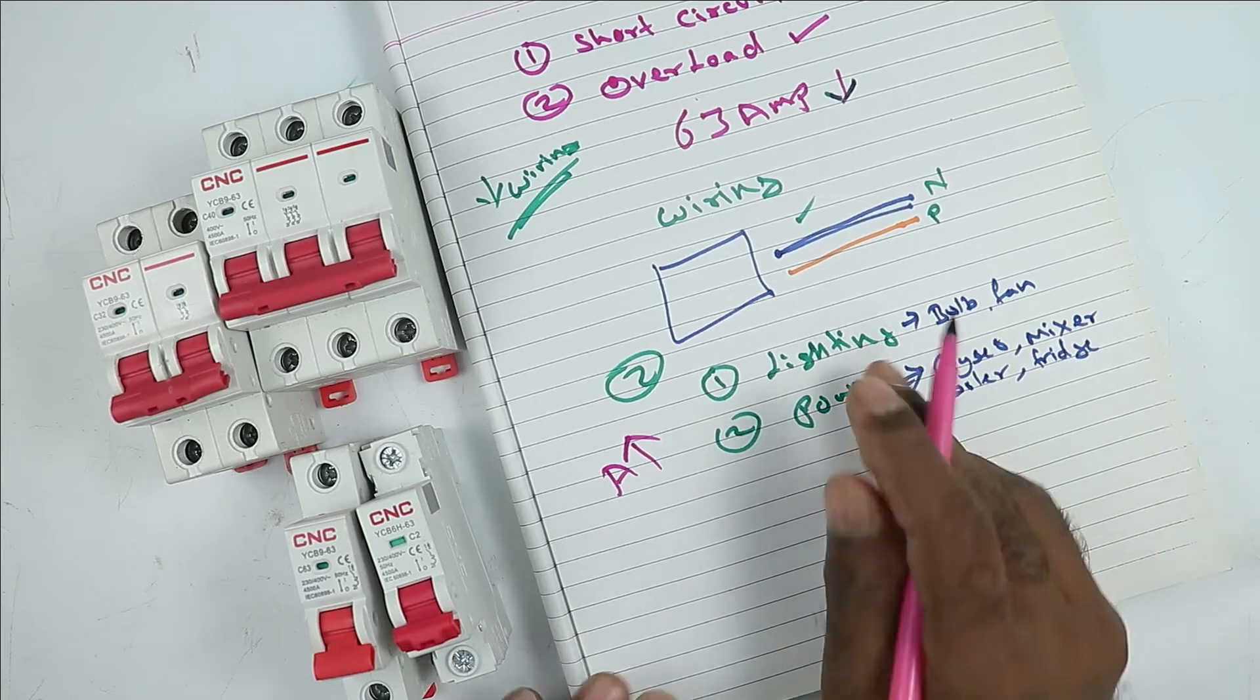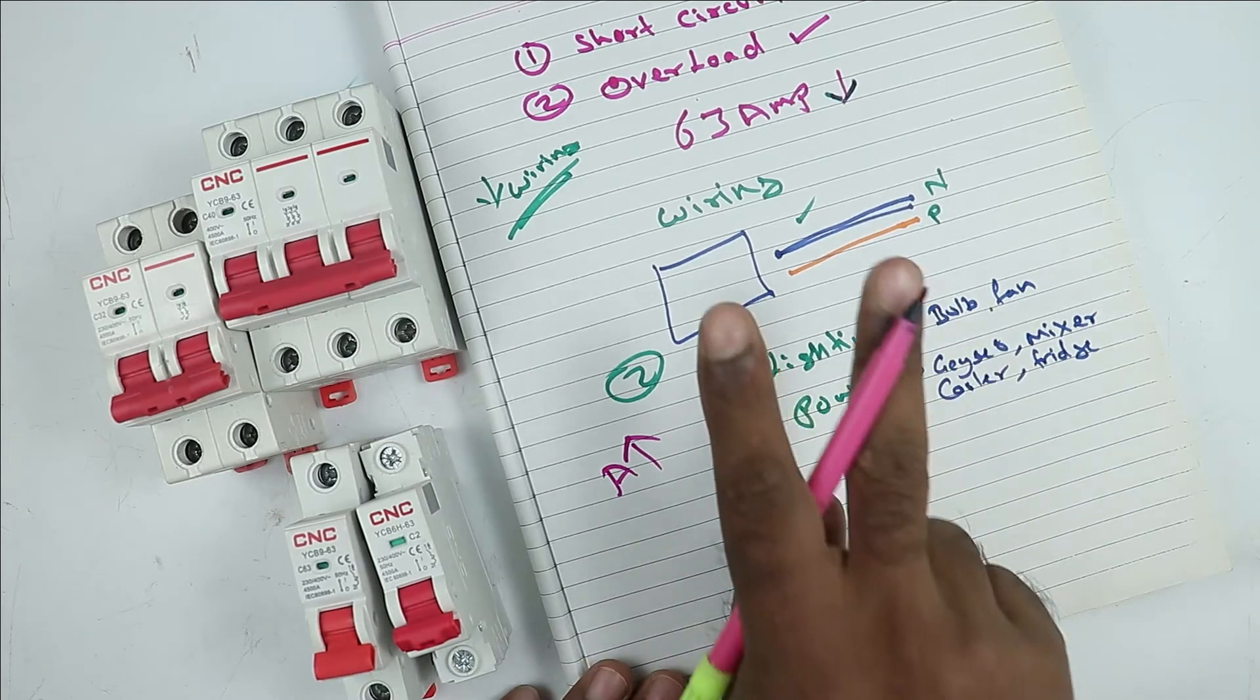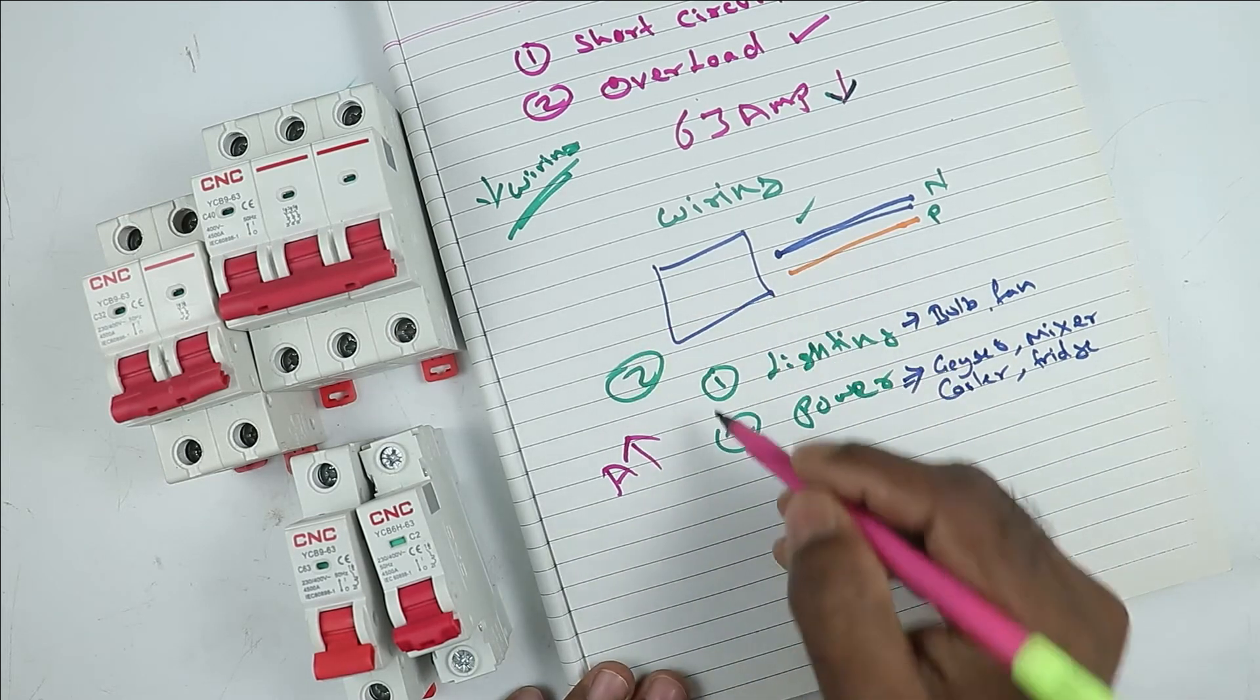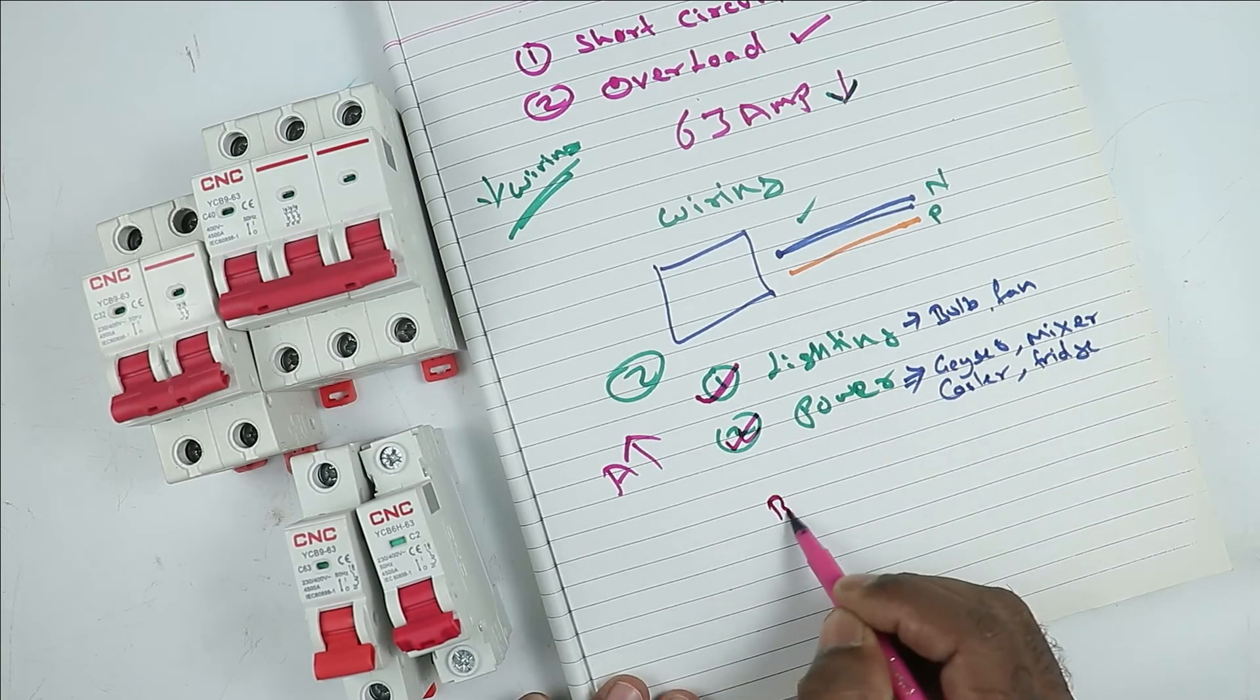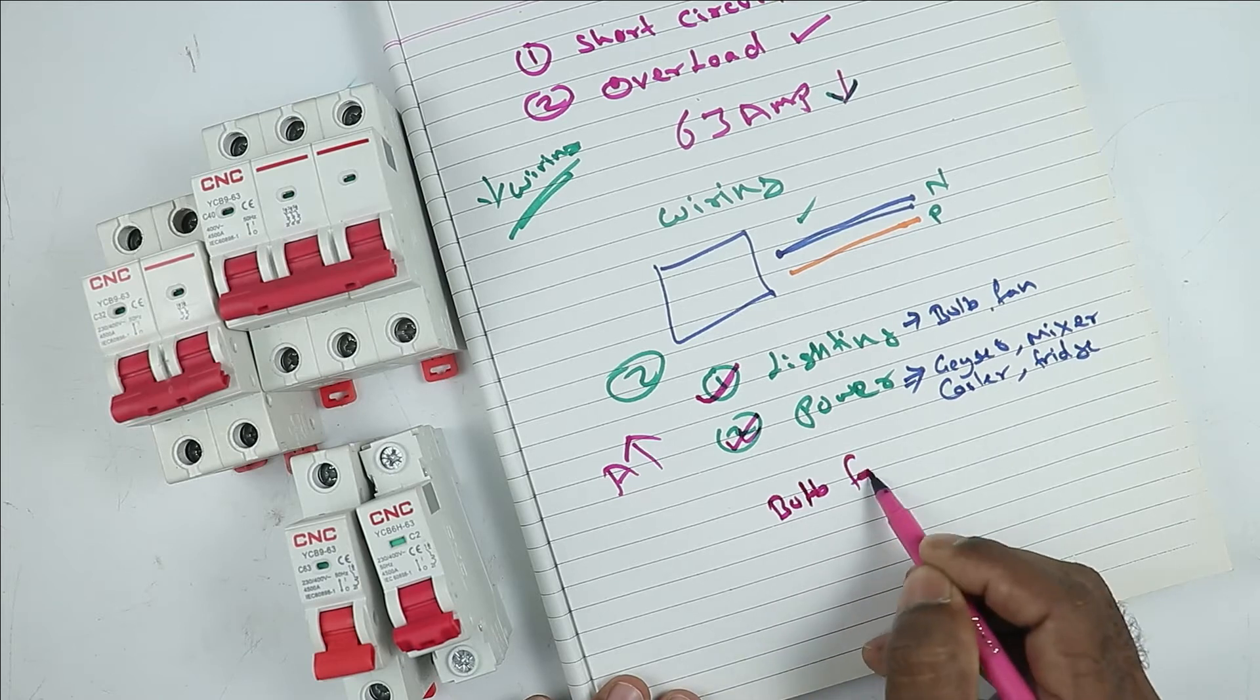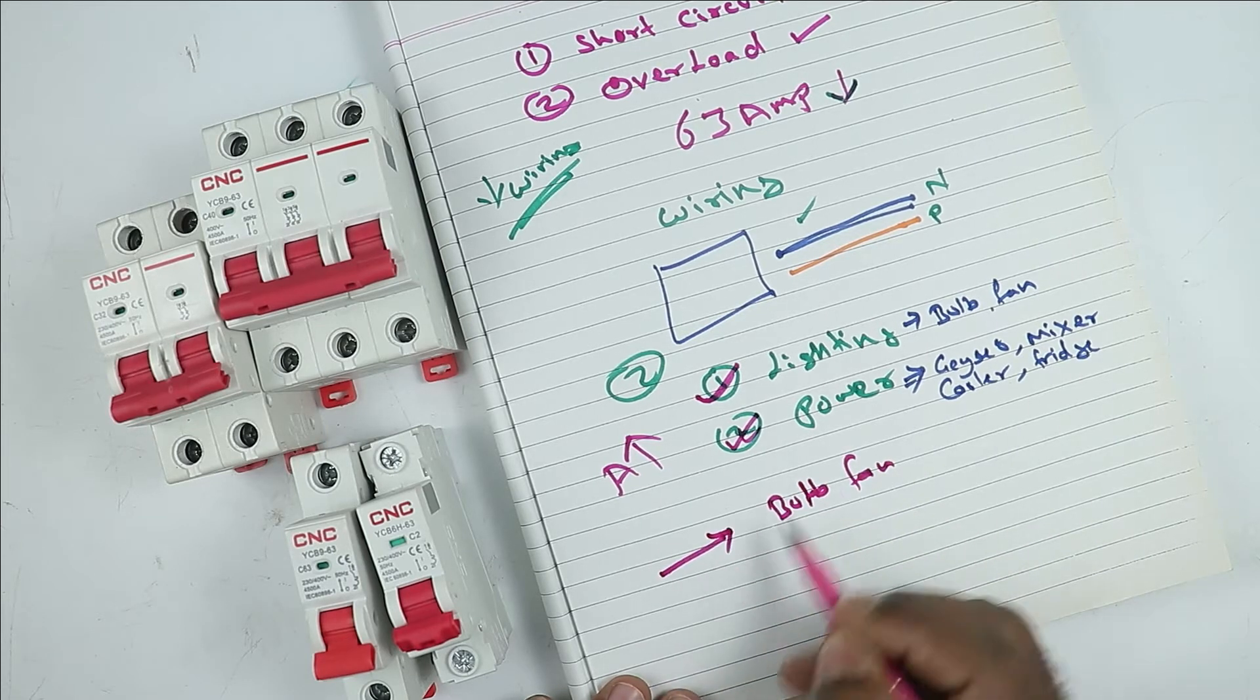When we go for wiring in our home, then at the time of wiring, you have to do two kinds of wiring. First one is lighting wiring. Second one is power wiring. So all the bulbs in your home as well as all the fans will receive the power supply through lighting circuit.